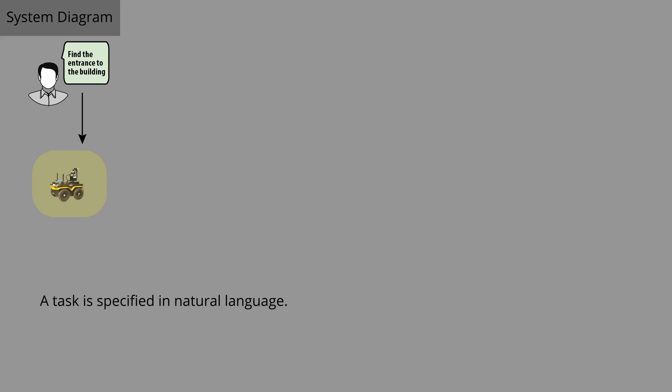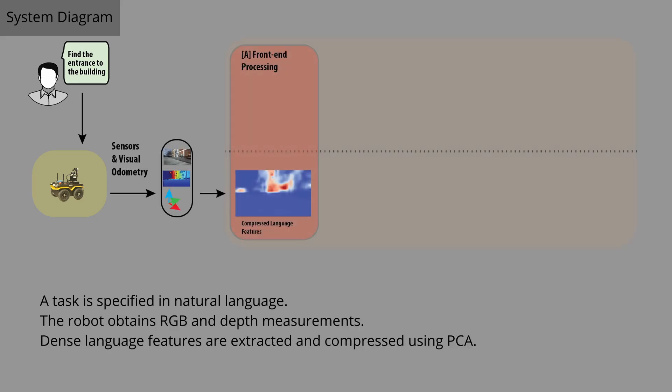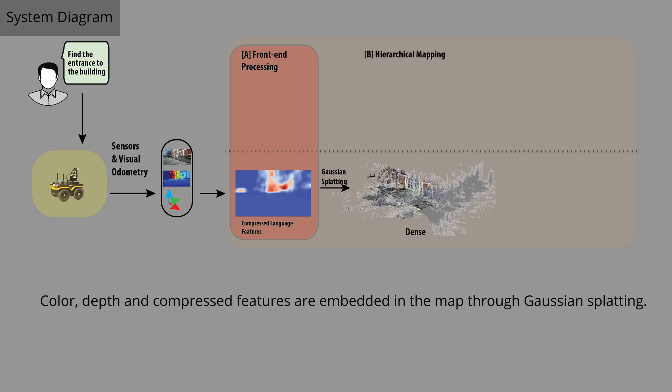A task is first specified in natural language. The robot obtains RGB and depth measurements, and dense language features are extracted and compressed using PCA. Color, depth, and compressed features are then embedded in the map through Gaussian Splatting. The dense features can be recovered directly from the Gaussians through inverse PCA.